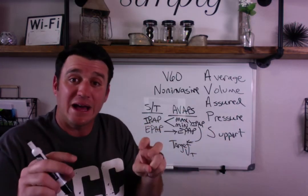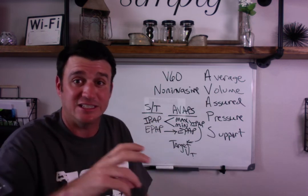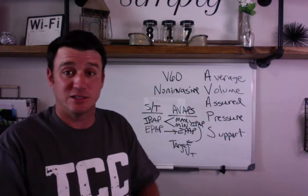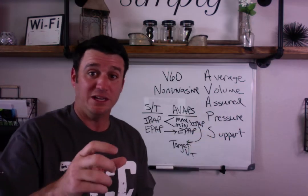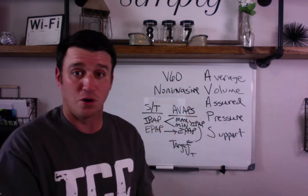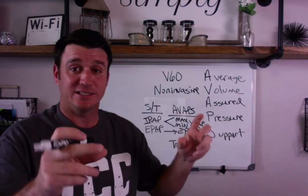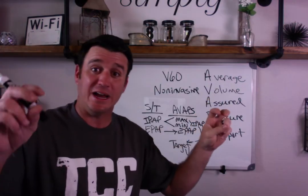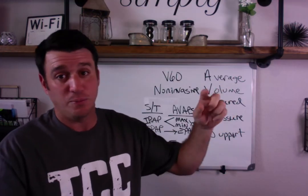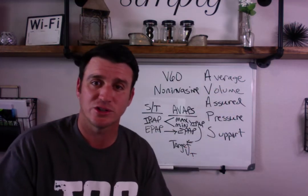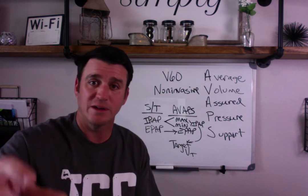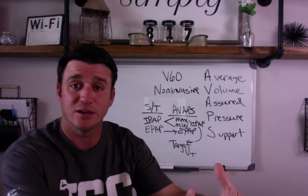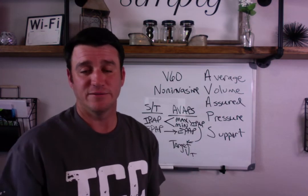Think about the same concept with AVAPS. You've got a little imaginary RT inside the V60 saying, 'Average tidal volume is too low — I need to increase IPAP because the target tidal volume has been set here.' Or, 'The average tidal volume is too high — turn the pressure down.' And it will adjust the pressure automatically without you being in the room, maintaining an assured tidal volume, which will hopefully equal an assured minute ventilation.